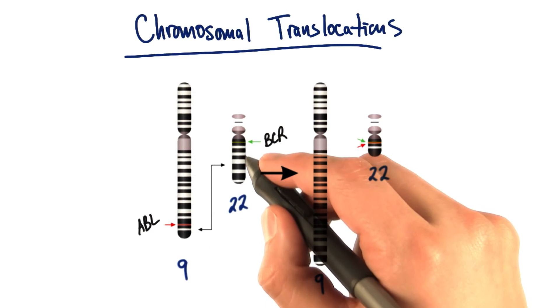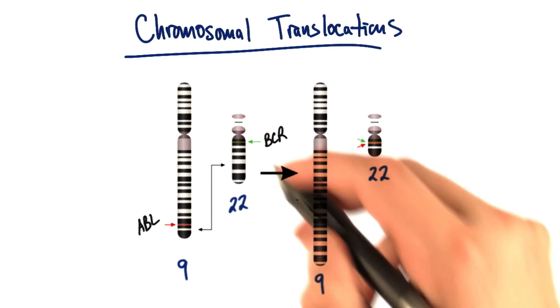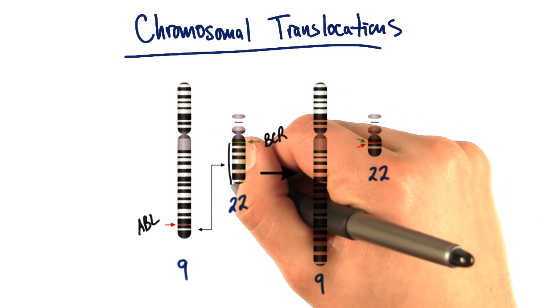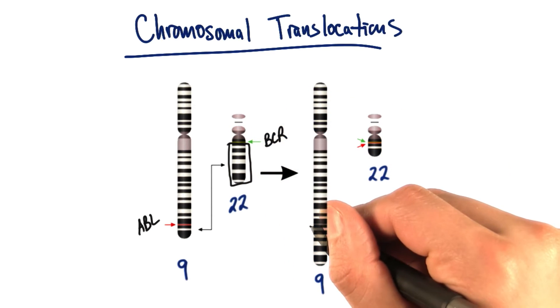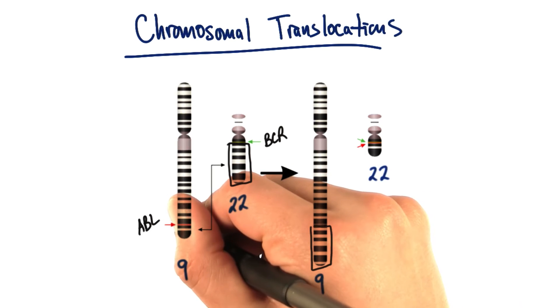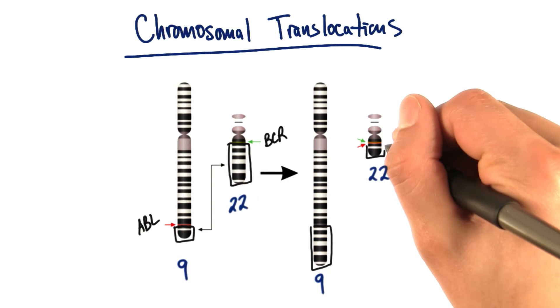This large chunk here gets put at the end of chromosome 9. So if I highlight this here, it's now down here. And this tiny region, ABL, is over here.